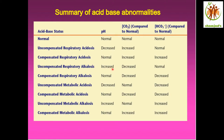Uncompensated respiratory alkalosis: the pH is increased, CO2 is decreased (respiratory alkalosis), and bicarbonate is normal — it is not compensated. In compensated respiratory alkalosis, the pH value is normal because of compensation. The CO2 still remains decreased due to the respiratory alkalosis. The bicarbonate is decreased because, in respiratory alkalosis, the bicarbonate level in the blood is high, so the kidney excretes bicarbonate. As the bicarbonate decreases, more acid is formed to neutralize the alkalosis.